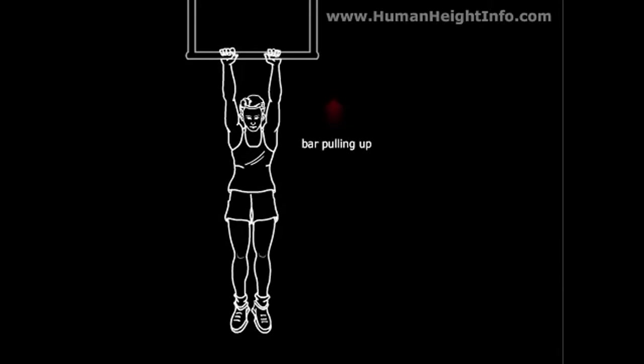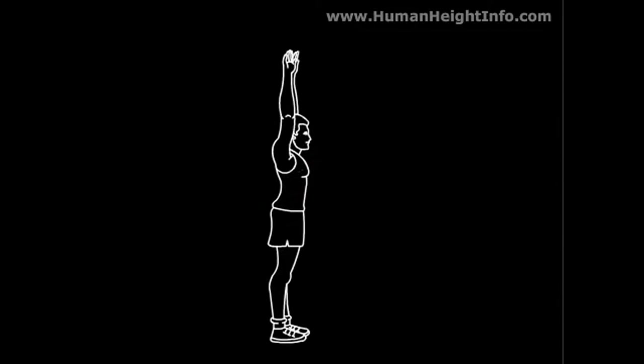For every action there is an equal and opposite reaction. The bar is pulling you up while gravity is pulling you down. This helps your spine to relax and elongate for a better posture.